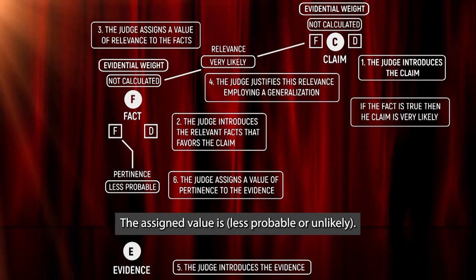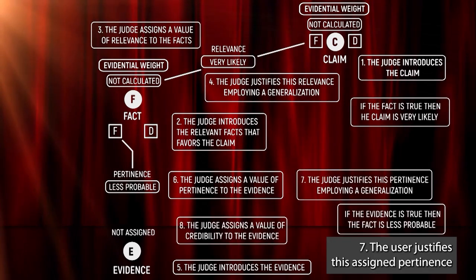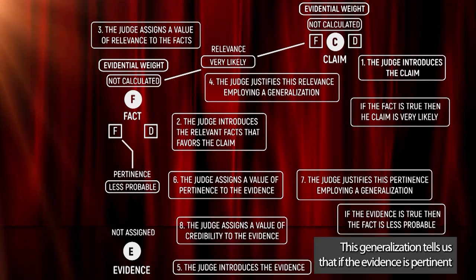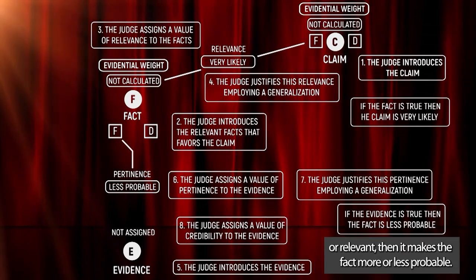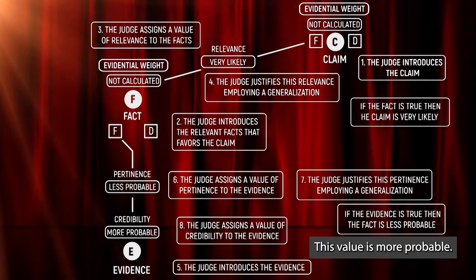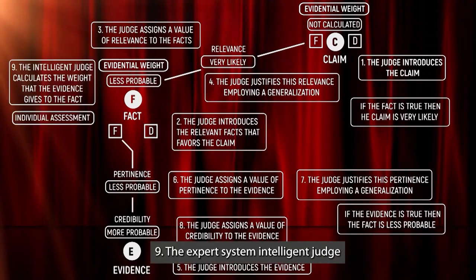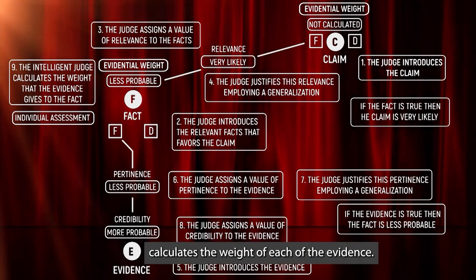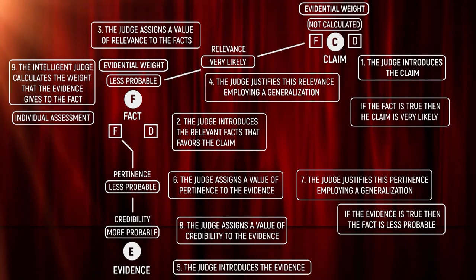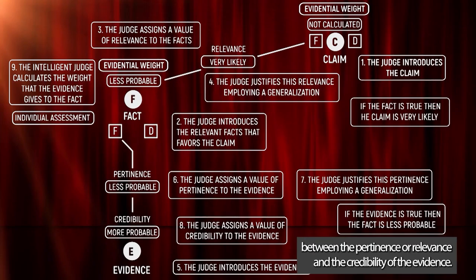The assigned value is less probable. Seven, the user justifies this assigned pertinence or relevance value by a generalization. This generalization tells us that if the evidence is pertinent or relevant, then it makes the fact more or less probable. Eighth, the user assigns a credibility value for each of the evidence. This value is more probable. Ninth, the expert system, intelligent judge, calculates the weight of each of the evidence. This corresponds to the individual assessment of the evidence. This weight of evidence is the lowest value between the pertinence or relevance and the credibility of the evidence.